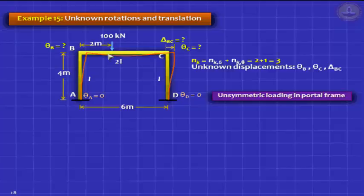Here there is no way out. You cannot take any shortcuts. You have three unknowns: theta B is an unknown, theta C is an unknown, delta B is an unknown. We did a problem earlier where it was symmetric and we solved with one unknown — we put a guided fixed support in the middle of BC and got away with it. Here you cannot. Some problems are difficult; we will do it the difficult way. Three unknowns — we can handle.